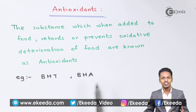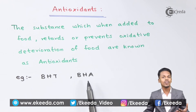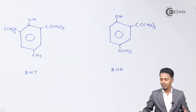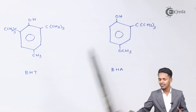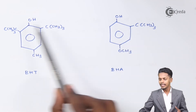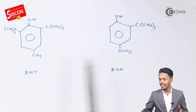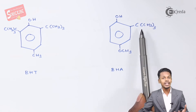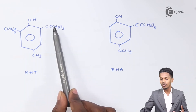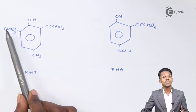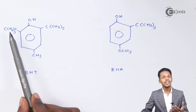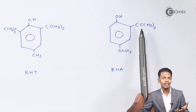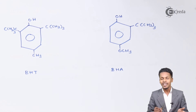The examples are BHT and BHA — that is butylated hydroxy toluene and butylated hydroxy anisole. Based on that, we have the structures of those. This is the structure of BHT and this is the structure of BHA, where we can find there is an OH group on both the rings. Here there is CH3 and here there is OCH3, and there is a carbon attached with three methyl groups — that is a tertiary butyl group. BHT has two tertiary butyl groups while BHA has only one tertiary butyl group.